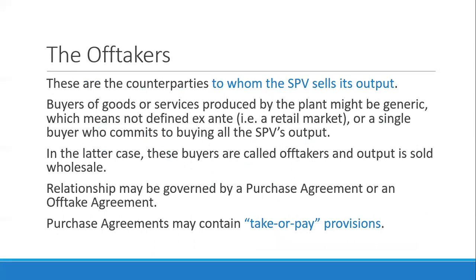Offtakers are the counterparties to whom the SPV sells its output. In the Bulacan bulk project, the offtakers are the different water districts within the province of Bulacan — multiple buyers but a set number of 20-plus. Their relationship is governed by a purchase agreement or offtake agreement, which usually includes take-or-pay provisions.